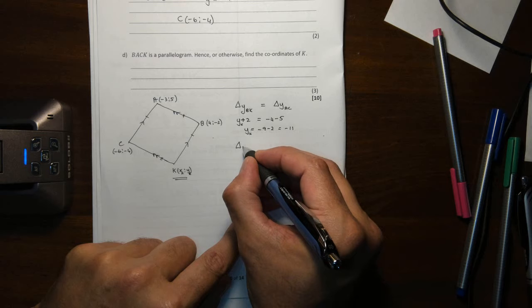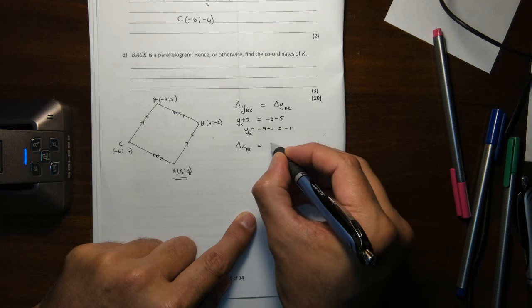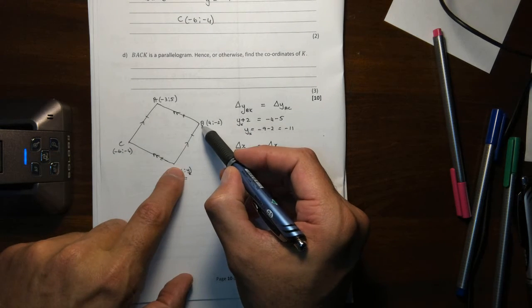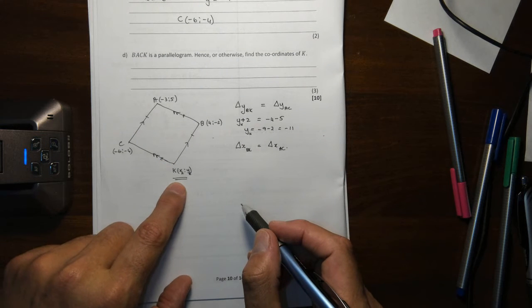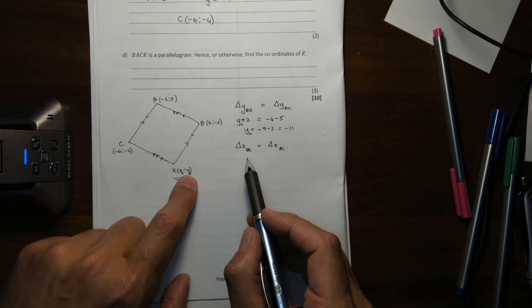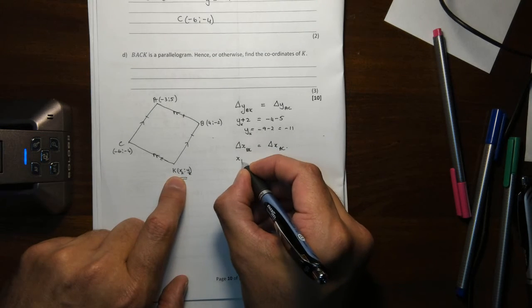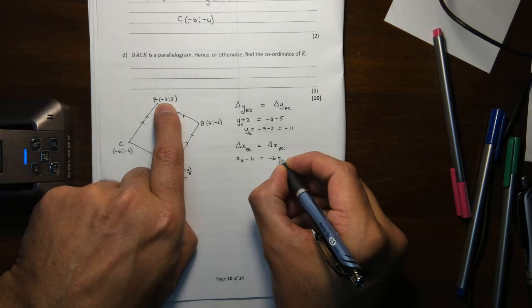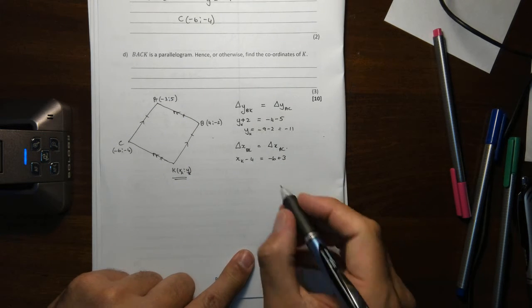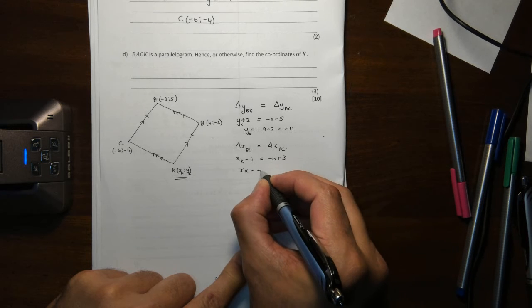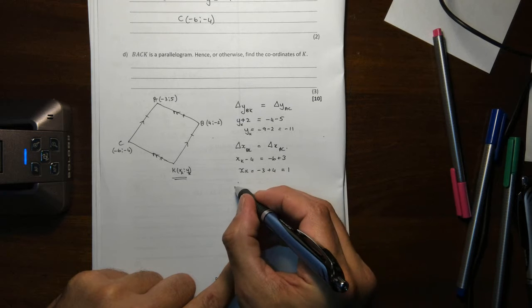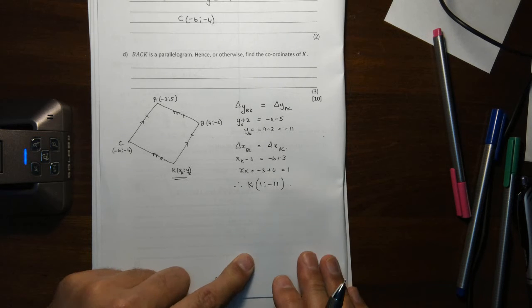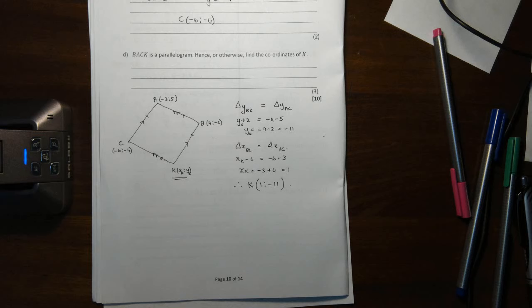Same for X. The change in X for BK must equal the change in X for AC. I'm doing that because those distances are equal and the gradients are equal. So I work the same way with my X. X minus 4, X of K minus 4, is then equal to minus 6 plus 3. It's a minus minus 3. So what is the X of K? The X of K is minus 3 plus that 4, which is 1. So what is point K? Point K is the point 1 and negative 11. We have that now. We've got that answer.